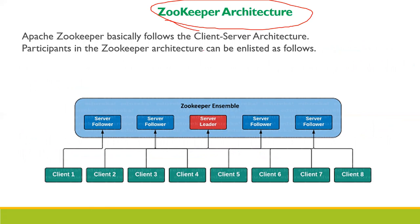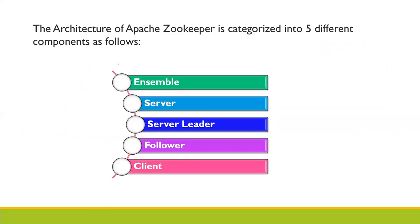Zookeeper basically follows a client-server architecture. The architecture of Apache Zookeeper can be categorized into five types: ensemble, server, server leader, follower, and client. These are the five different components available in the architecture of Apache Zookeeper.